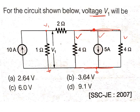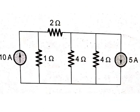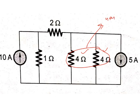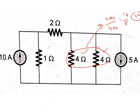If you see, this 4 ohms and 4 ohms are in parallel. So 4 ohms and 4 ohms in parallel: 4 × 4 divided by 4 + 4 = 16 by 8 = 2 ohms. So instead of these two resistors we replace with a 2 ohm resistor, and then this 2 ohms will be in parallel with the current source.